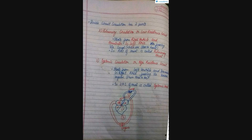Now we will see the characteristics of pulmonary circulation. Pulmonary circulation is also known as the low resistance circuit. It starts from the right ventricle and terminates into the left atrium, as we have seen. The blood passes through the lungs. So the right hand side of the heart is also known as the pulmonary heart.